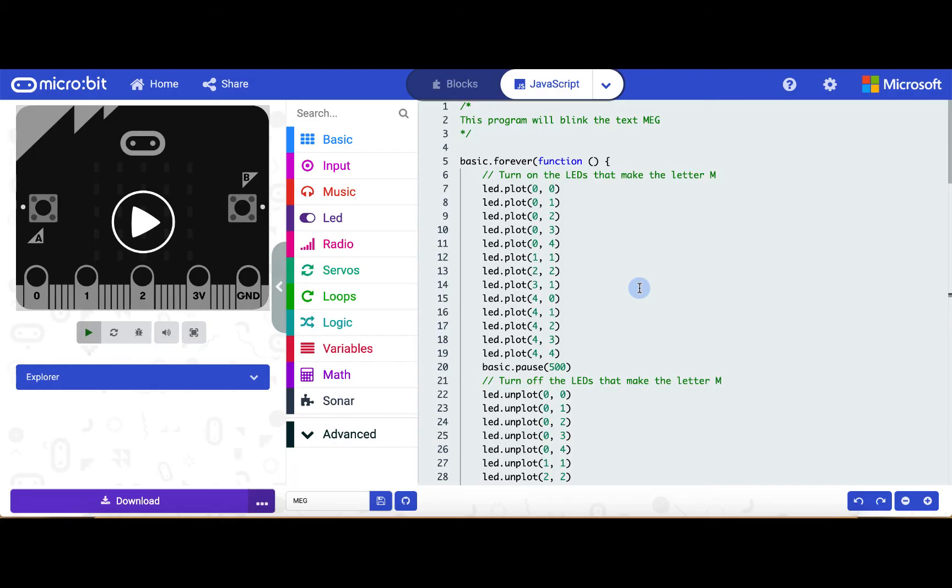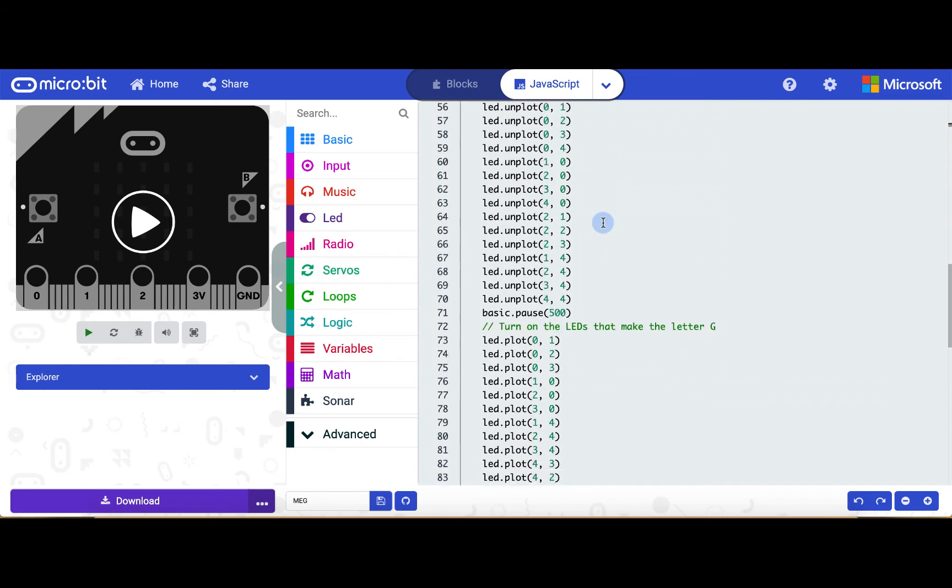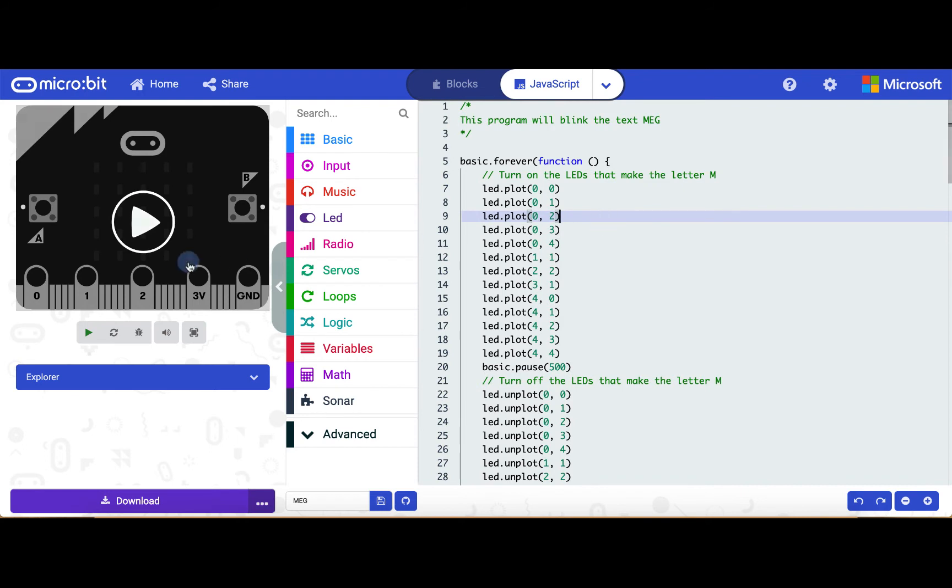Here we have a program that we wrote as an extension of the blinking first letter program. We want to blink the text MEG, and we wrote all of our commands that we need in order to do this. Now let's see if this works.